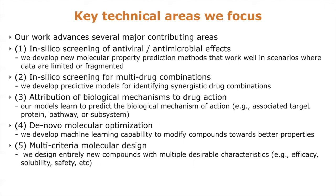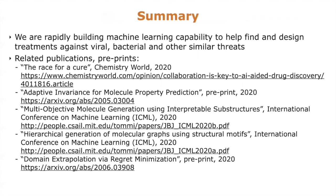In a slightly longer term, we are realizing capability to generate entirely new compounds that would have better characteristics — for example, efficacy, solubility, safety characteristics, and so on. In summary, we are building machine learning capability to find and design treatments against viral and bacterial threats. This is a list of recent publications and preprints related to this work.